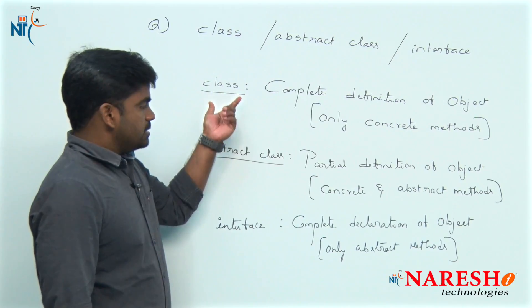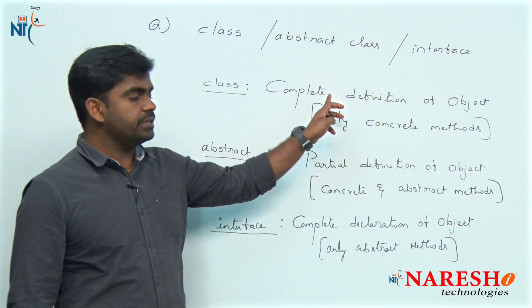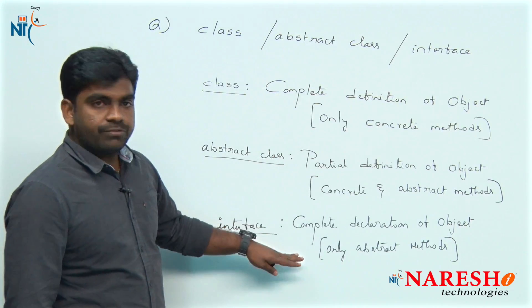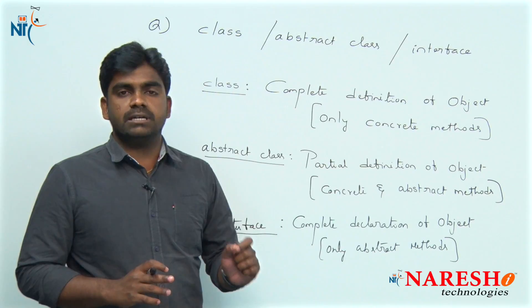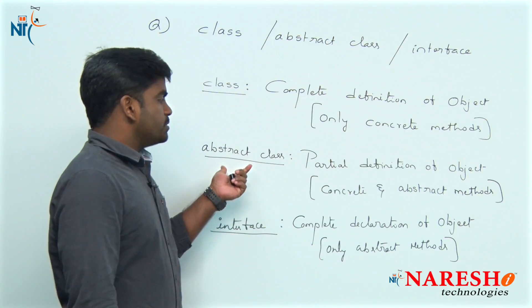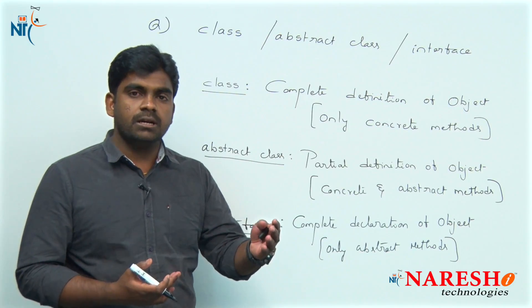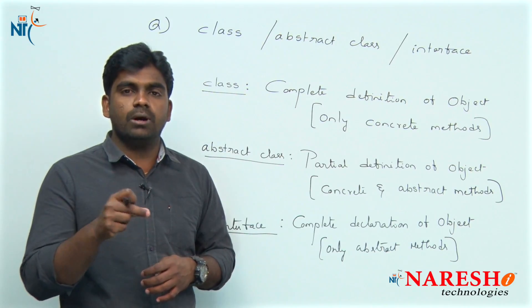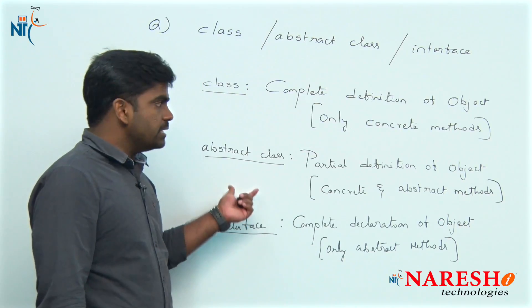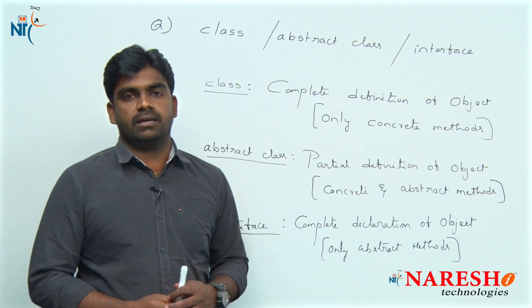To summarize: a class is the complete definition of an object — 100 percent defined. An interface has no definition — 0 percent — only declarations and abstract methods are present. An abstract class is a combination of concrete methods and abstract methods — greater than 0 and less than 100 percent. This is how we can easily define and remember all three. Hope you understood. For more videos please subscribe to the Nourish IT channel, thank you.